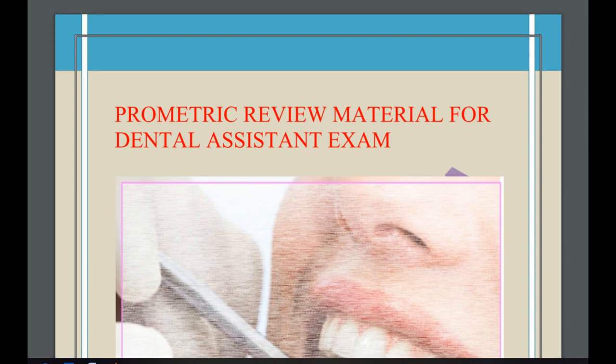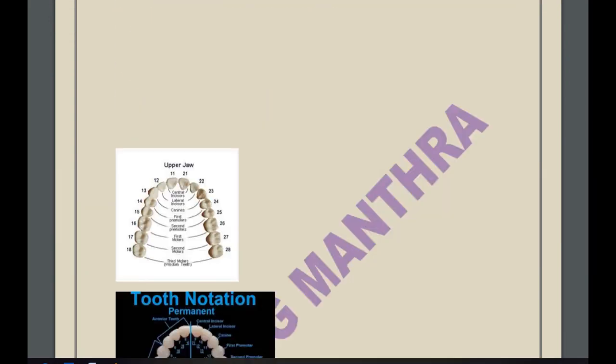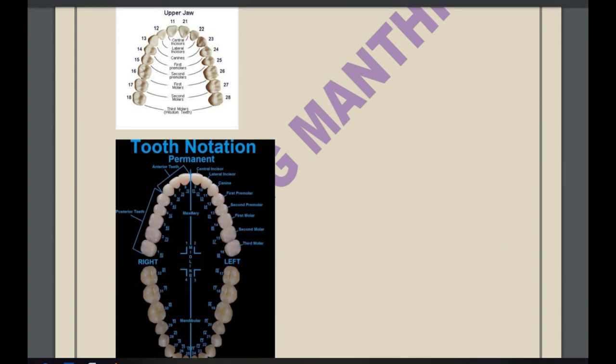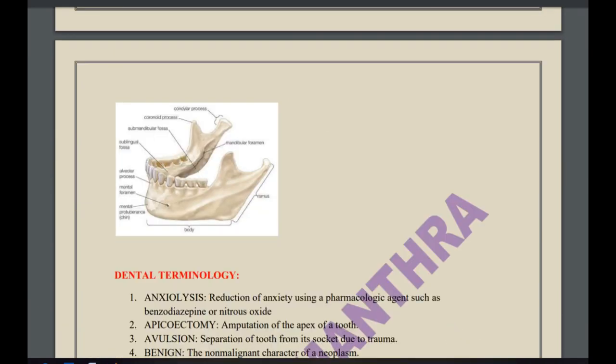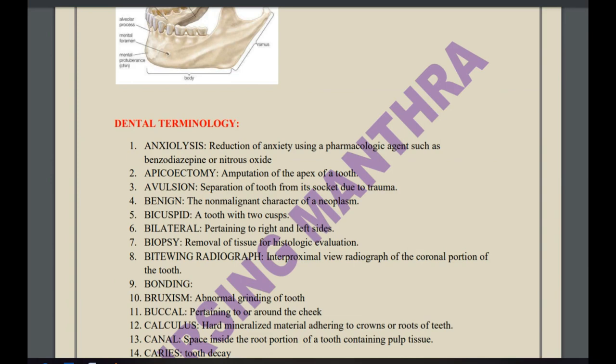Today's video is related to the dental assistant prometric material. Please subscribe to our channel to get updated videos. This is the book related to the prometric review material for the dental assistant exam. First I have given pictures related to tooth anatomy, tooth notation, the universal numbering system, nearby bones and their names. After that I have given dental terminologies, which are very important from an exam perspective — they can ask one-word MCQ questions on these terminologies.